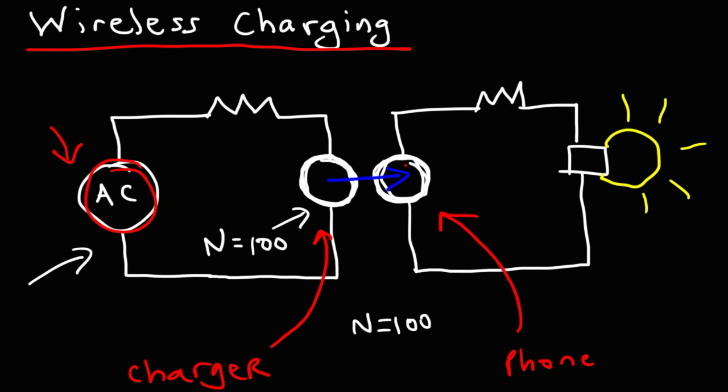Otherwise, energy won't be transferred from one coil to the other effectively. The current has to be changing in order for energy to be transferred from one coil to the other. If the current is constant, no energy transfer will take place.